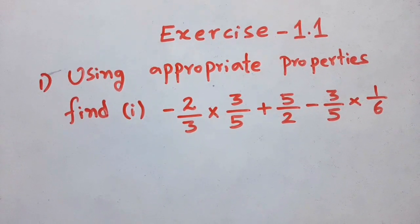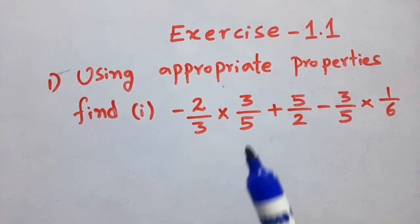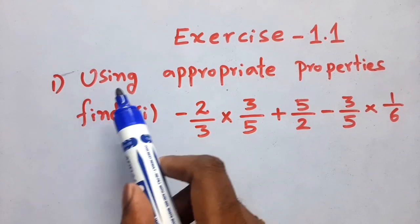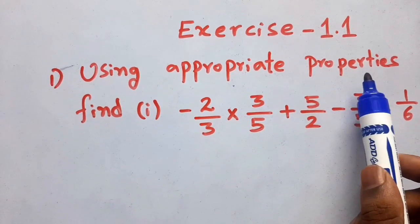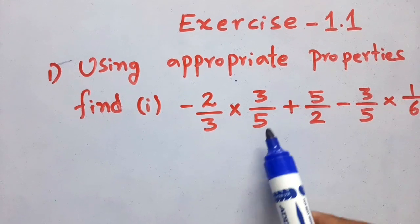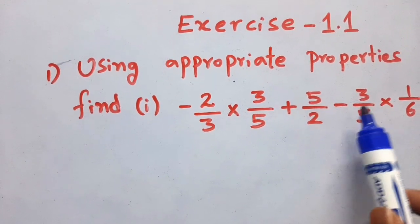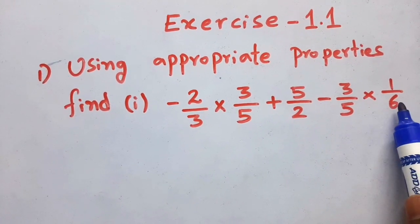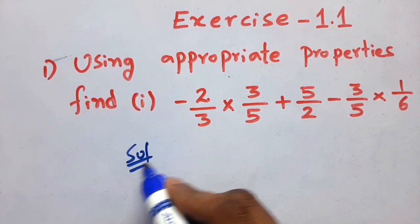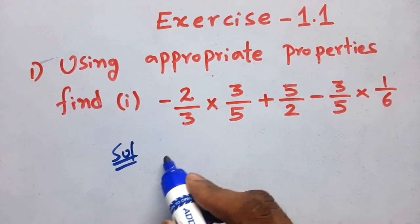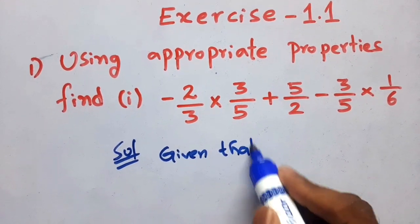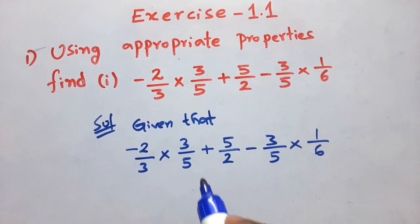Hi everyone, welcome back to Surya Math channel. See exercise 1.1. The first problem is: using appropriate properties, find minus 2 by 3 into 3 by 5 plus 5 by 2 minus 3 by 5 into 1 by 6. I will explain the solution. First, you have to write the given expression.